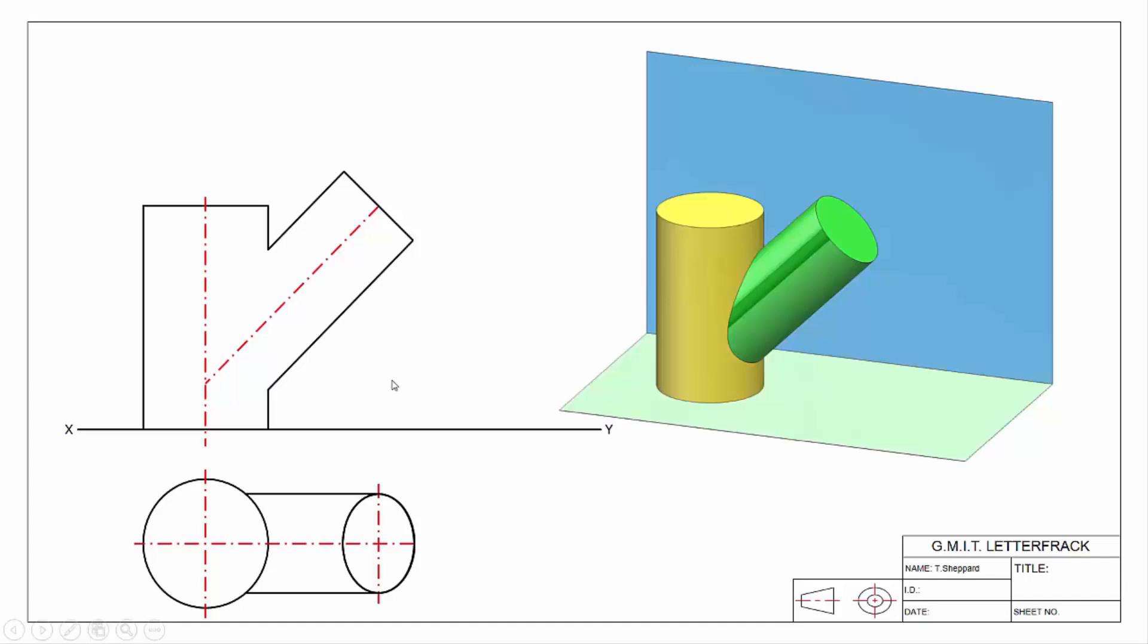If we're looking along our center line, our auxiliary is going to be perpendicular to that, our X1Y1 line. We're going to project our center line along and we're going to draw in our circle. For a normal auxiliary, the position of our center point here, the distance off the XY line, would be the same as the distance in our plan view.